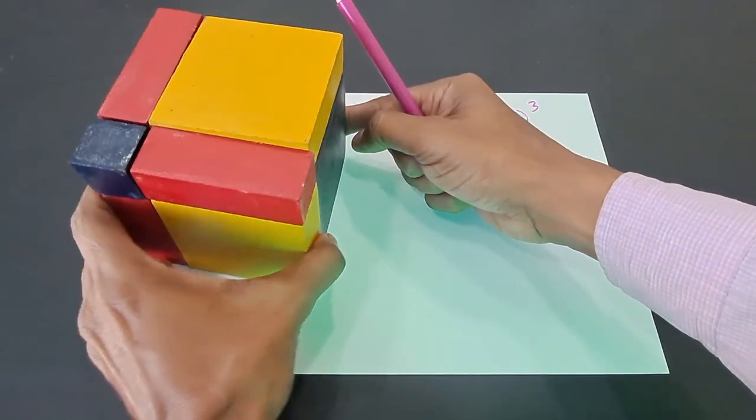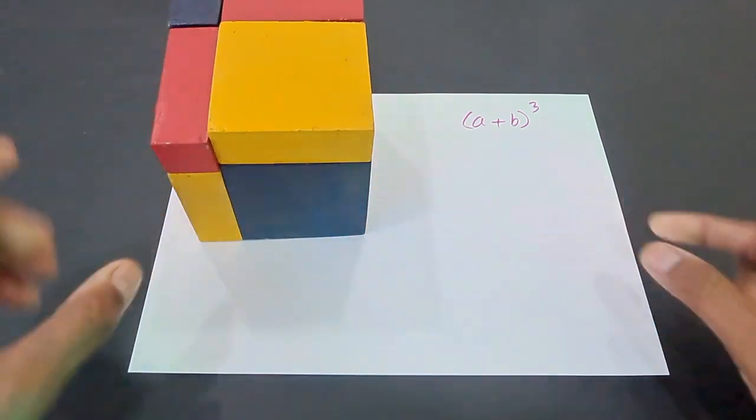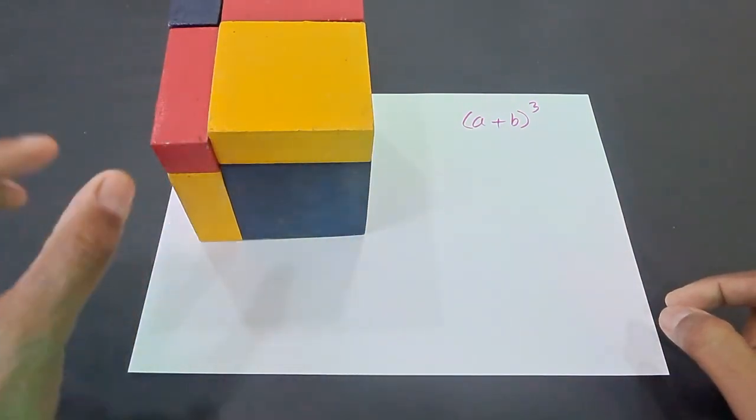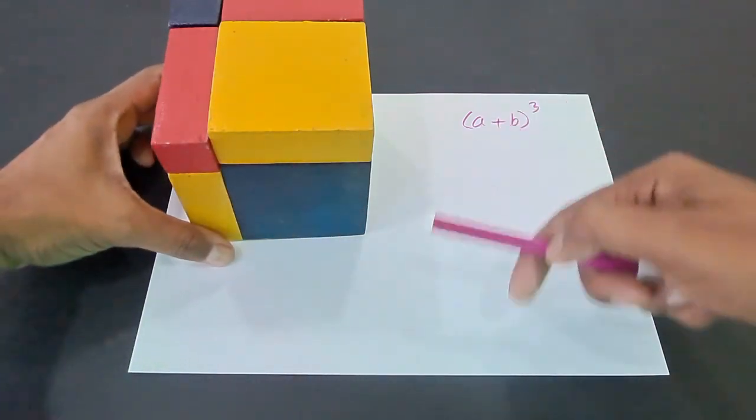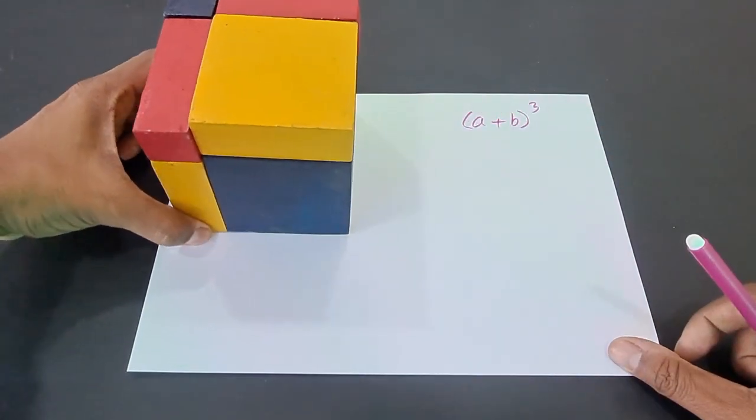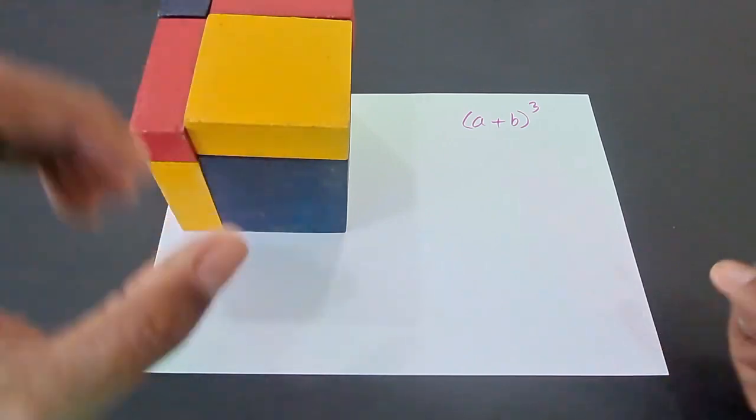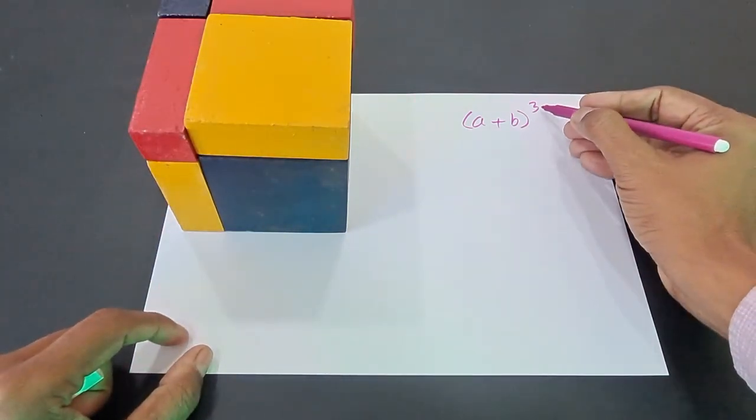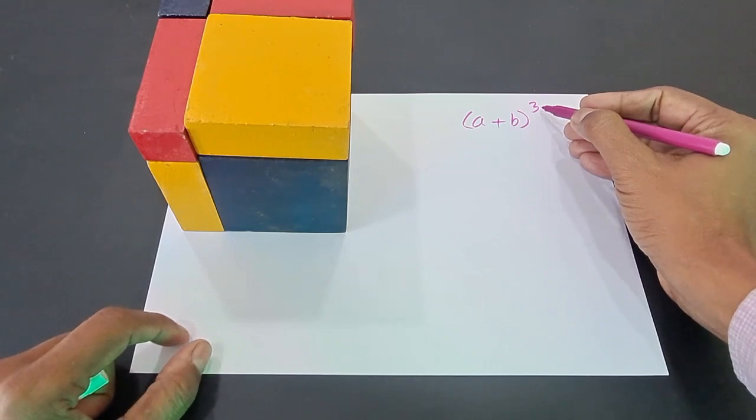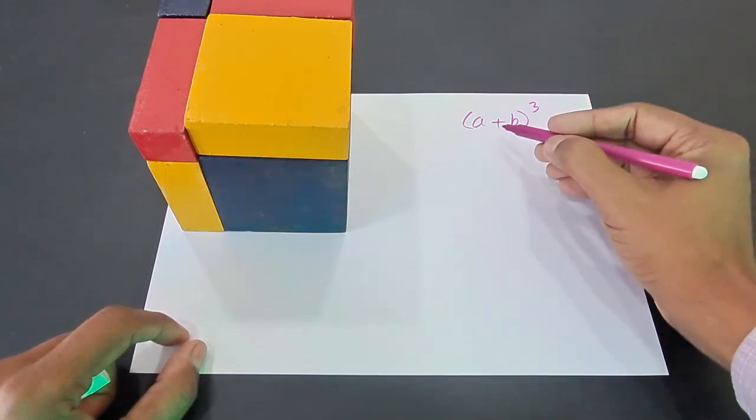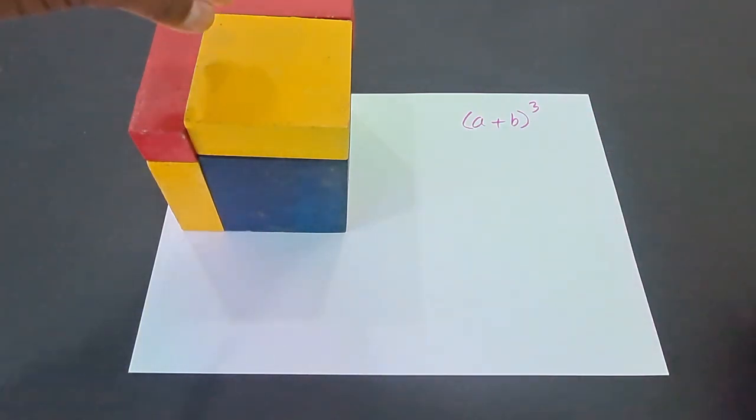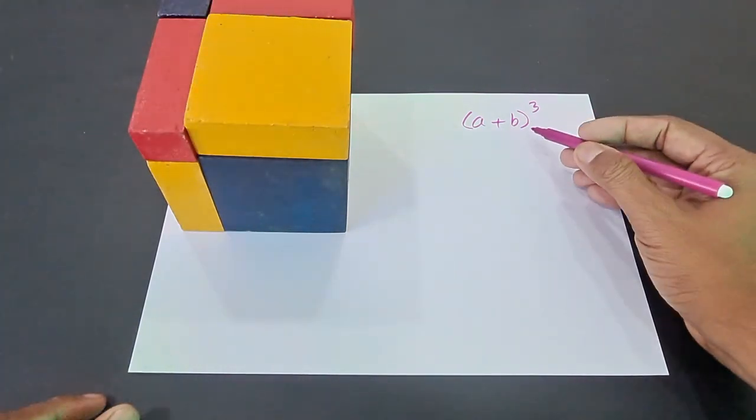If you turn it and see any other edge, you will find a and b. So the edge is (a+b); all 12 edges are the same. Therefore, the volume of this particular cube is (a+b)³, because the formula for finding the volume of a cube is the cube of the side. So this is a cube of volume (a+b)³.